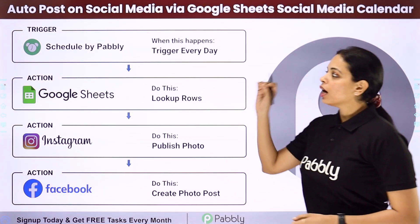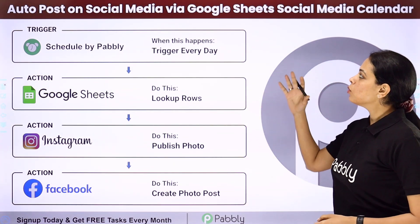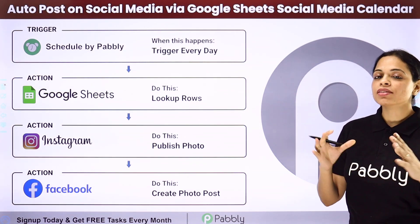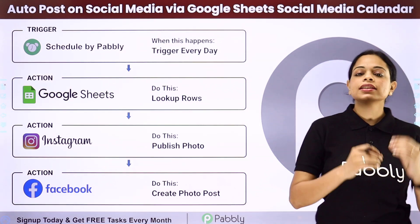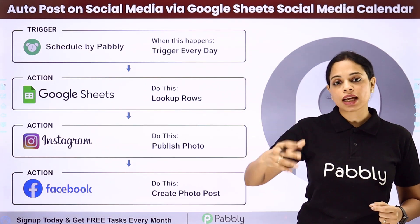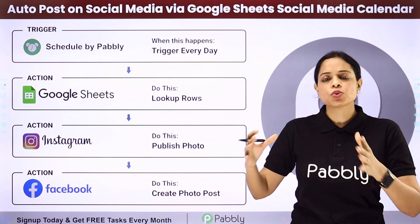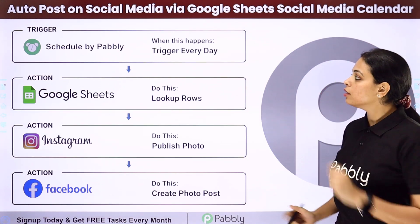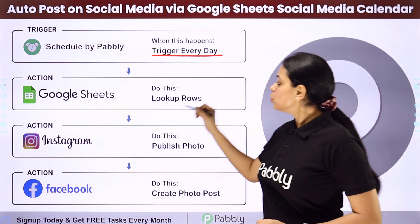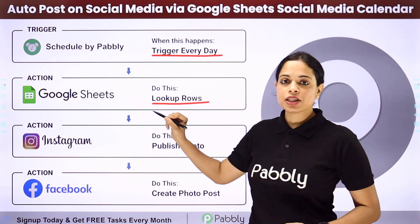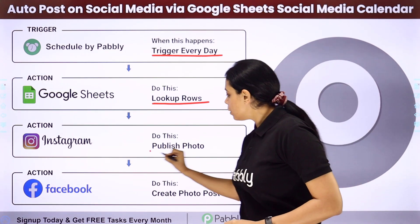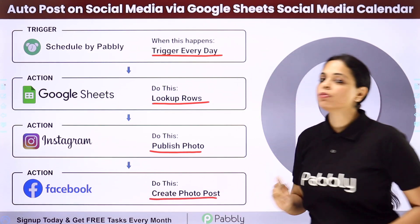In this video, we are going to understand how to auto post on social media via a Google Sheet social media calendar. Let's say you have a spreadsheet with a social media calendar containing dates, times, post captions, and image links for different platforms. You will schedule a workflow to trigger every day, look up rows in your spreadsheet, and publish the data on social media when the date matches the current date.